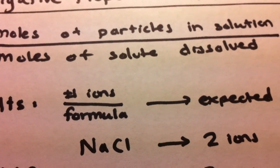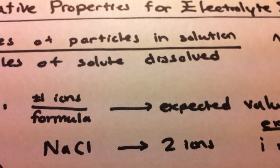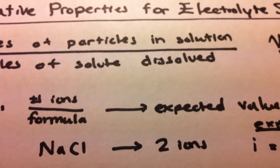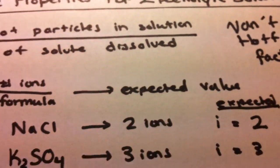For sodium chloride, it's going to dissociate into two ions, sodium and chloride ions. So our expected i value will be 2.